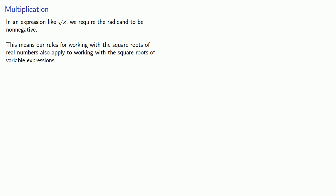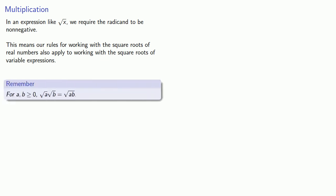One particularly important rule is that for a and b greater than or equal to 0, the square root of a times the square root of b is equal to the square root of a times b. The product of square roots is the square root of the product, and conversely, the square root of a product is the product of the square roots.